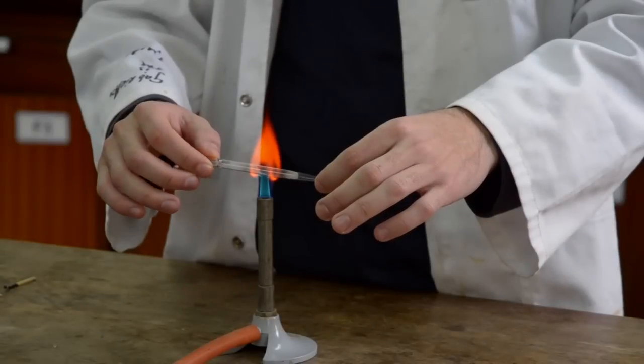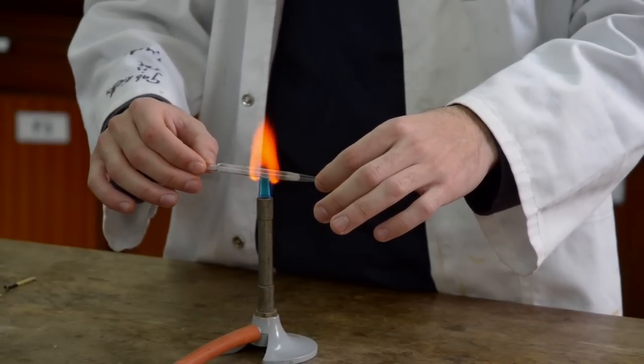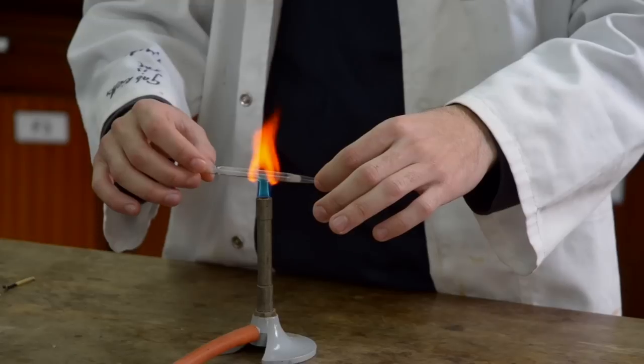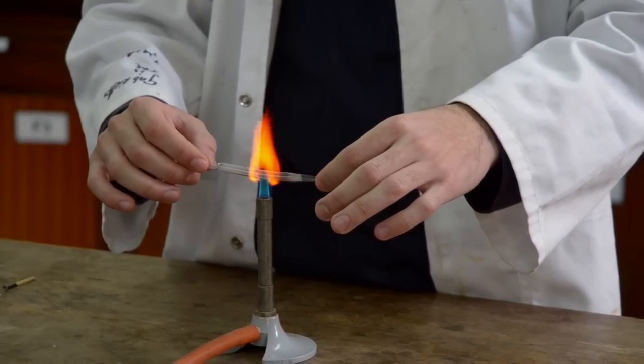Heat the middle of a pipette over a blue Bunsen flame. Hold the ends carefully as they will get hot. Using latex gloves is not ideal as they usually reduce your grip on the pipette.